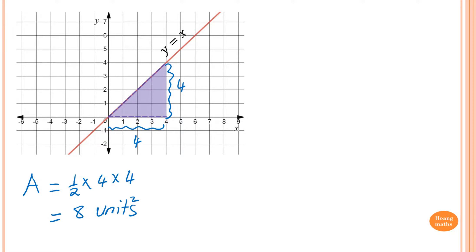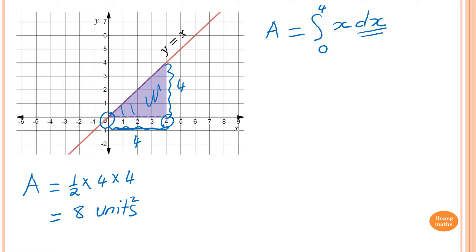Now, we can use calculus to find the shaded area. By using integration between 0 to 4, because the x value is from 0 to 4, so we integrate from 0 to 4, and the function is y equals x, so of course x dx.